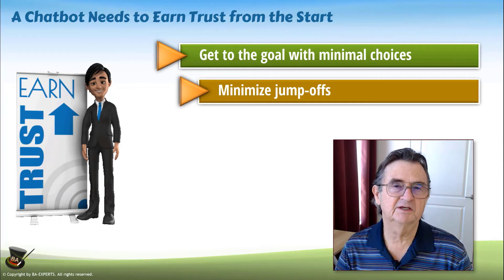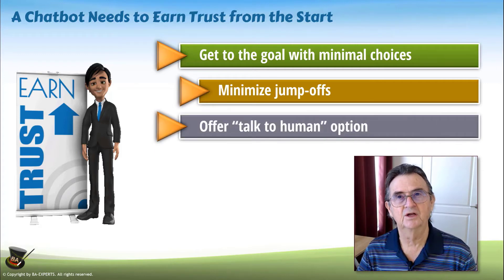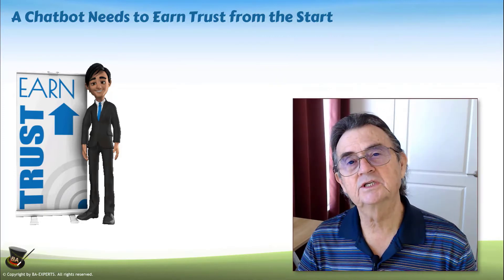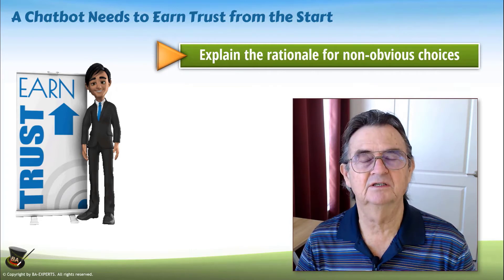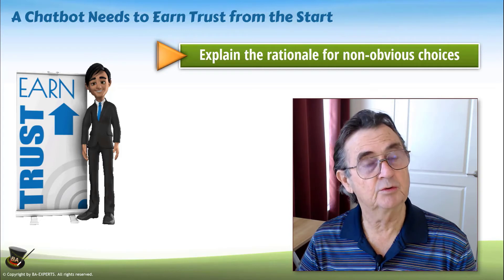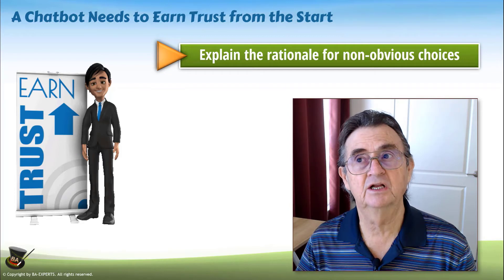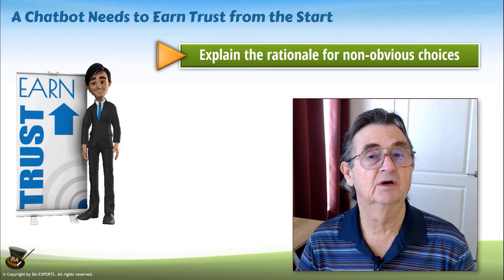Because people have that desire to talk to people, give them that option. Offer them the ability to do that whenever it makes sense in the decision-making process. Consider keeping the talk-to-human option available on many different levels. If there are any choices that people have to make that are not obvious — choices that they'd have to think about — make sure that you offer the user the ability to ask for help, ask for an explanation, and let them understand why you need that particular choice and how it is going to help guide them to their ultimate goal.